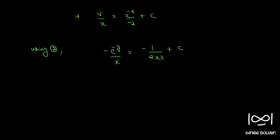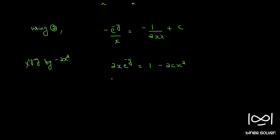Multiplying throughout by minus 2x squared, we have 2x e raised to minus y is equal to 1 minus 2cx squared. We can also write this as 2x e raised to minus y is equal to 1 plus 2c₁x squared, where c₁ equals minus c.